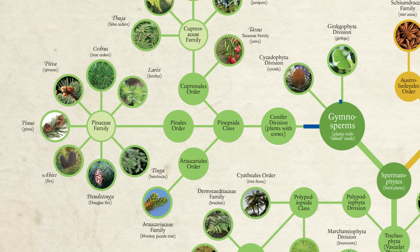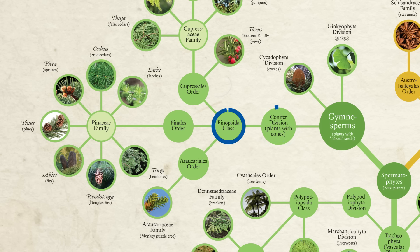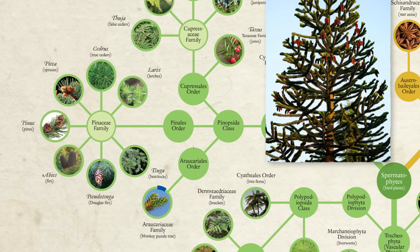Most gymnosperms are conifers, meaning that they grow cones. But there are actually a few other kinds such as cycads, which grow mainly in the tropics, and the famous ginkgo tree, which produces these unique fan-shaped leaves which fall off in the winter. But we're going to focus on the conifers because that's where we'll find Christmas trees and other evergreen trees we tend to associate with winter. Within the conifer division, we get the Pinopsida class, which then divides into three orders. The two main ones are Cupressales, which means cypress-like, and Pinales, which means pine-like. The third one, Araucariales, is where we find the very strange-looking monkey puzzle tree.